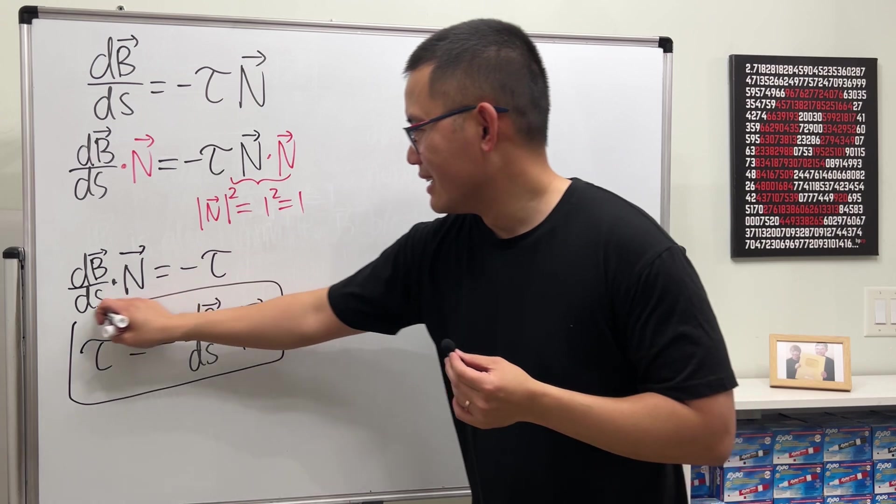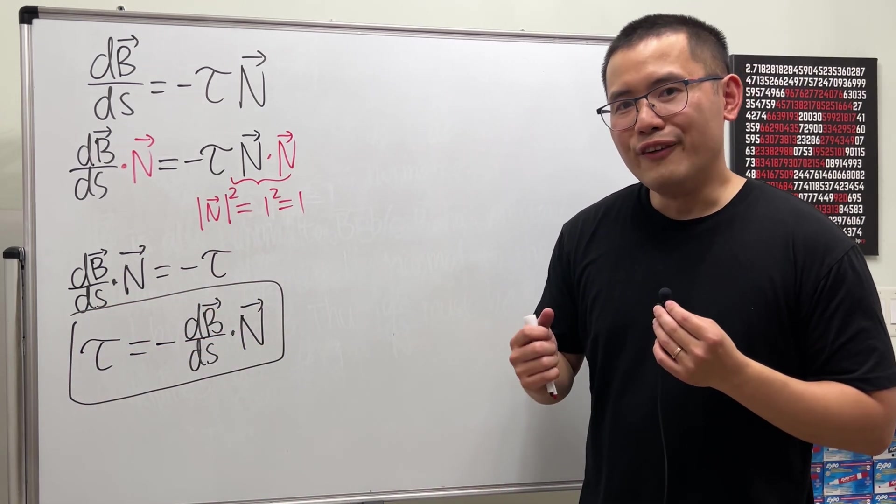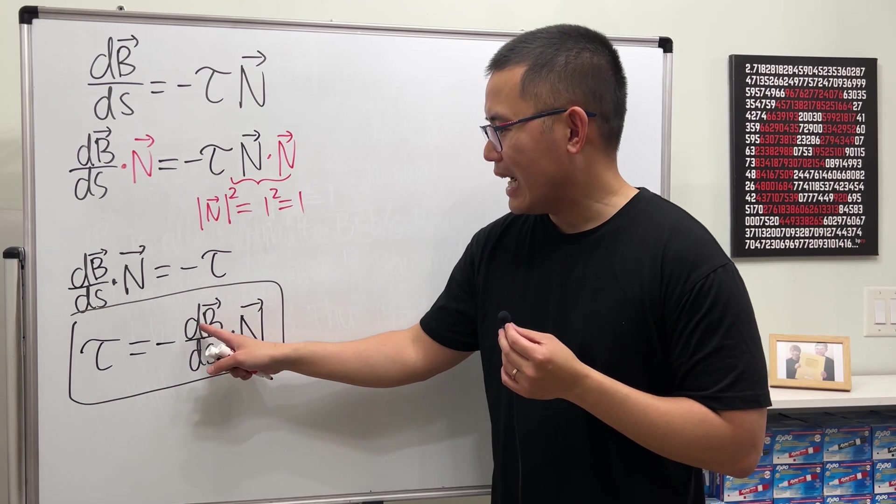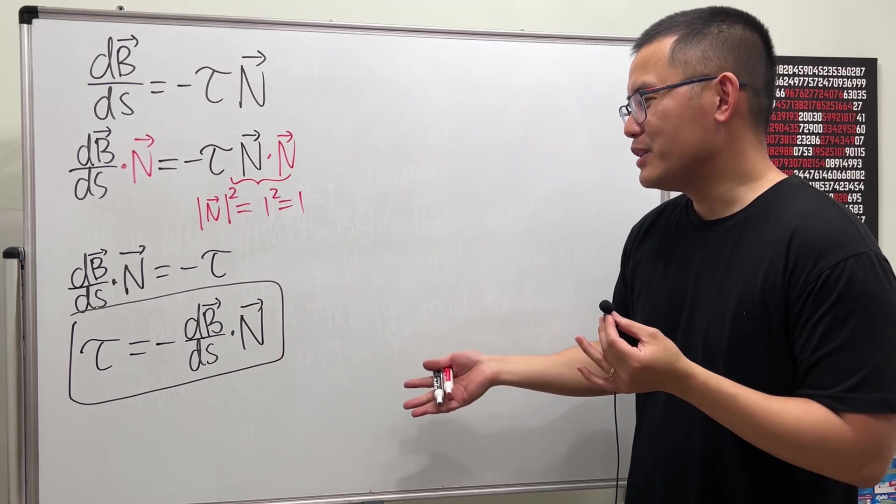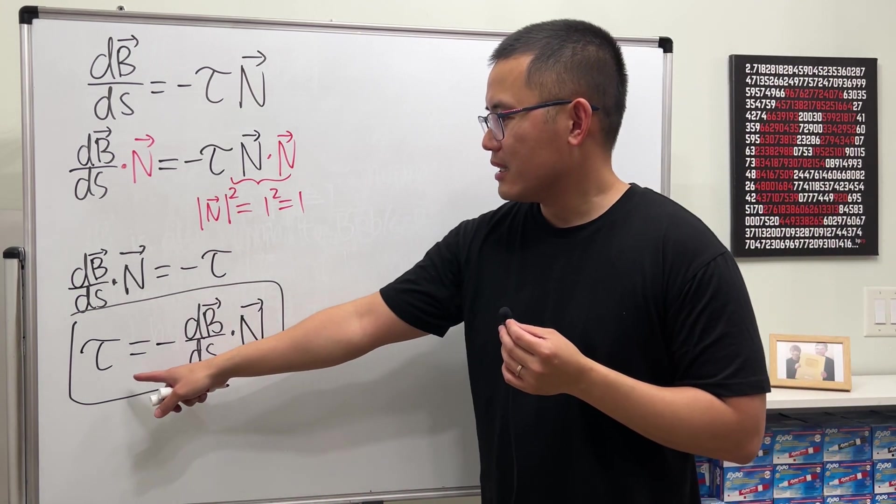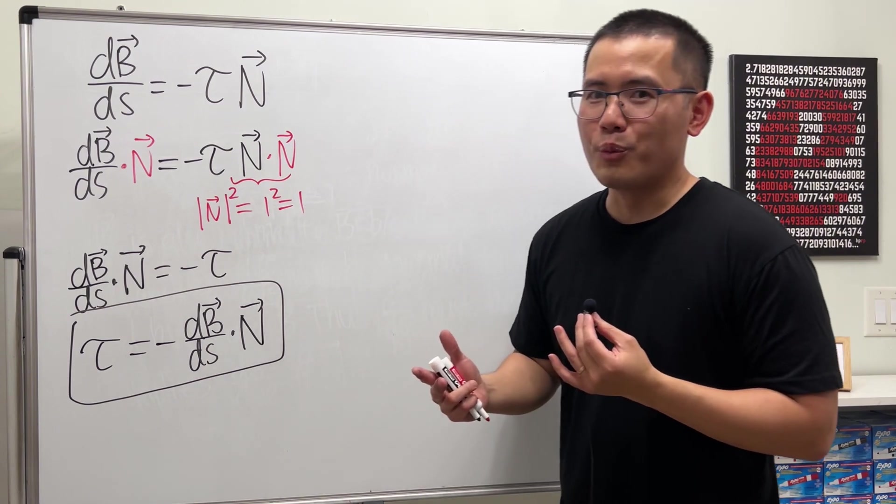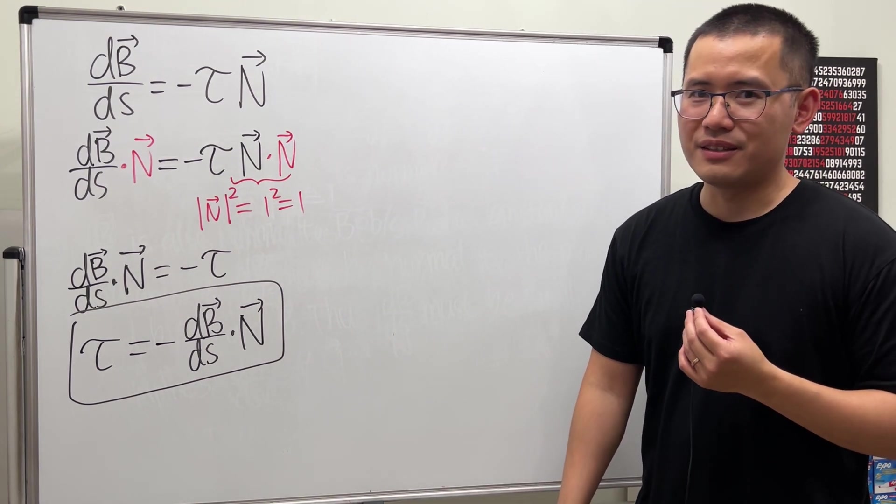Whew. Yeah. So, that's it. This is the definition of tau. Unfortunately, here, whenever we have differentiation with respect to s, it's not so easy to do, right? So, we also have different formulas to compute tau, just like we have different formulas to compute the curvature. But I'm going to work that out for you guys in another video.